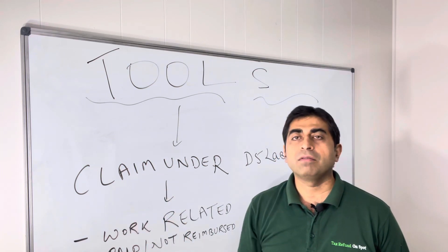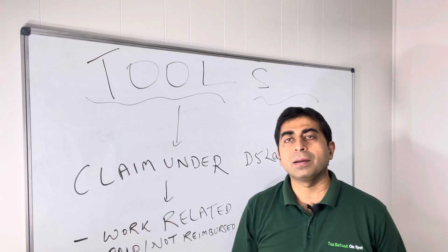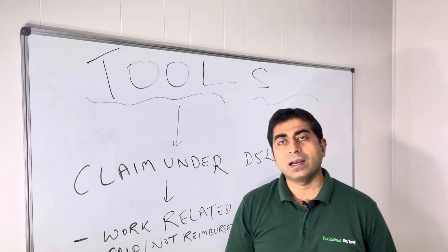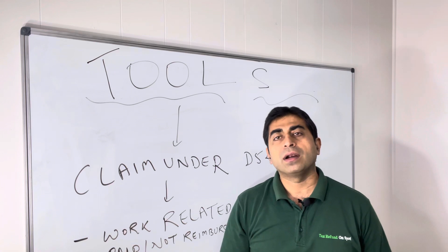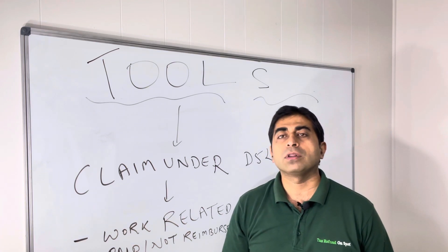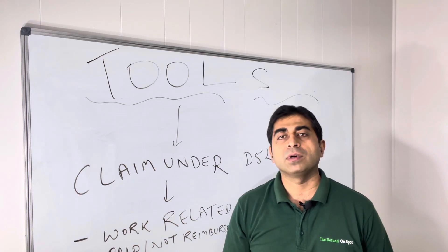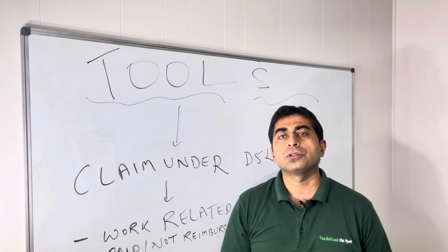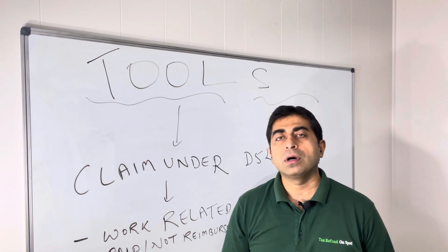Three simple rules. They can claim under the D5 level, which is other work-related expenses level in their tax return. Rule one: it should be work-related. What job you're doing, tools should be bought for that job - not for your home, not for anything personal. Tools should be used for your work.